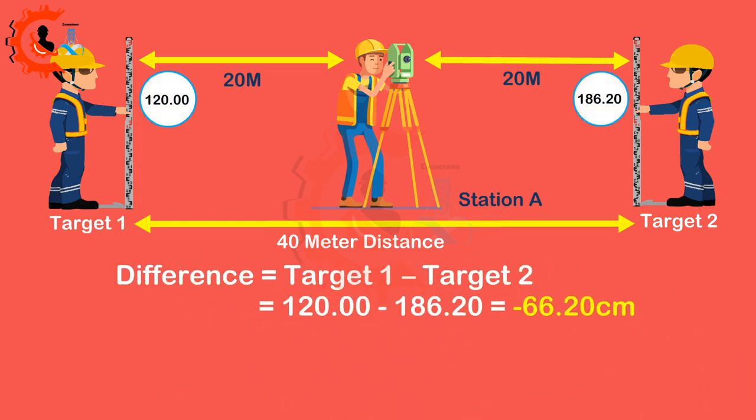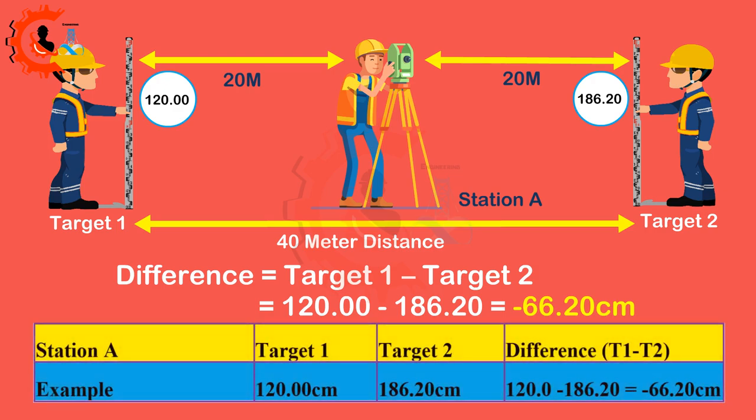Difference equals target 1 minus target 2 is equal to 120.00 minus 186.20 equals minus 66.20 centimeters.